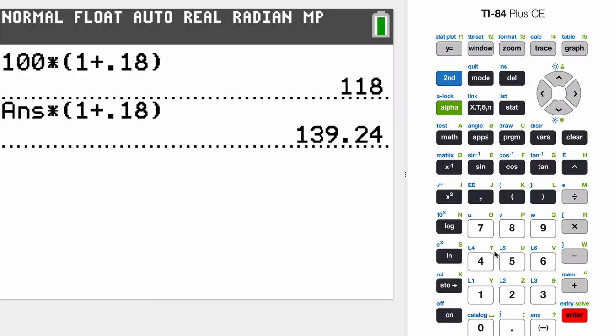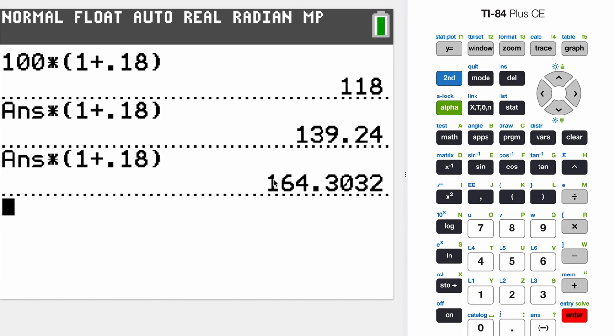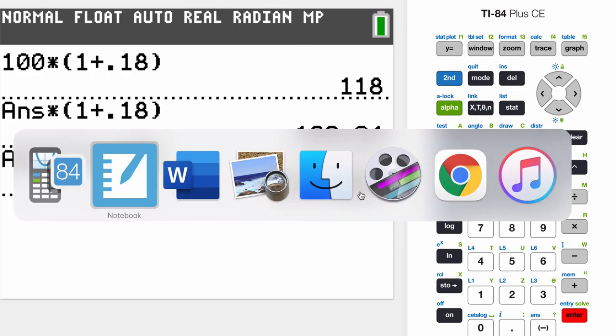And after three years, it's times another 1 plus 0.18. 1 for the 100%, and we're adding 18% each time. 164.3032.